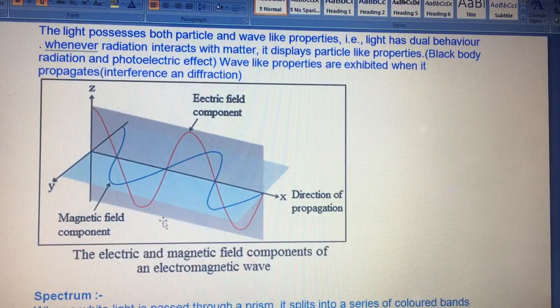Whenever radiation interacts with matter, it shows particle-like properties such as in black body radiation and photoelectric effect. Light also shows wave-like properties because it exhibits interference and diffraction.